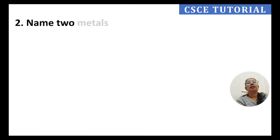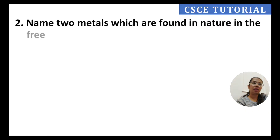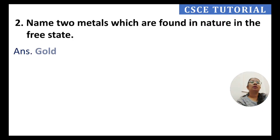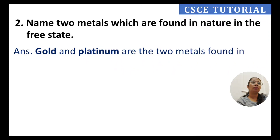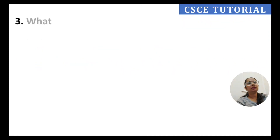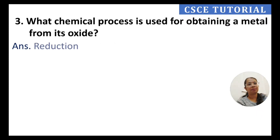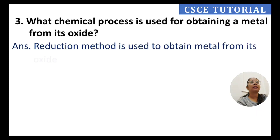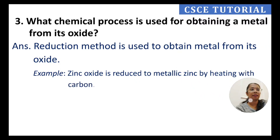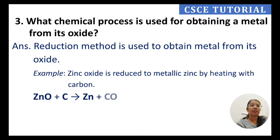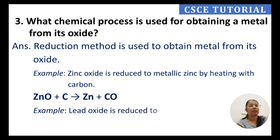Question 2: Name two metals which are found in nature in the free state. Answer: gold and platinum are two metals found in the free state in nature. Question 3: What chemical process is used for obtaining a metal from its oxide? Reduction method is used. For example, zinc oxide is reduced to metallic zinc by heating with carbon, and lead oxide is reduced to lead by heating with carbon.